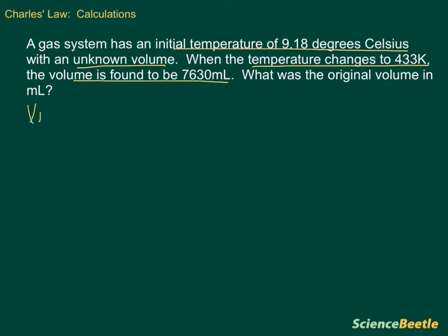Our V1 is equal to unknown. Our T1 is equal to 9.18 degrees Celsius. Now keep in mind we need to convert this to Kelvin, so we do need to add 273. So we're going to do plus 273, and that will give us a Kelvin number. Let's take care of it now, so we don't have to come back later. So 9.18 plus 273 gives us 282.18.